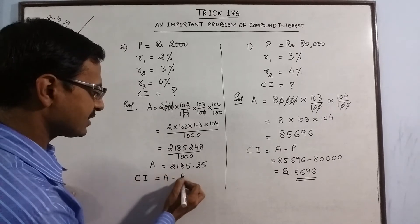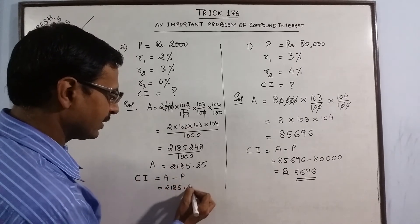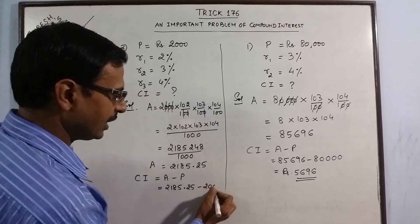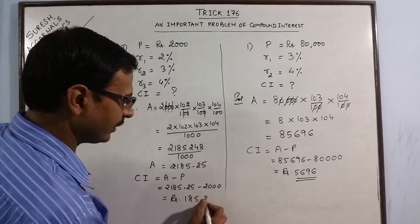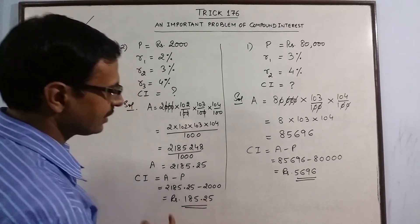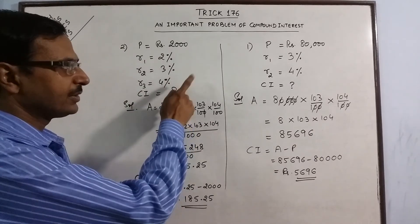The compound interest will be amount minus principal. So if you subtract this amount and the principal 2000 you get the answer as rupees 185 point 25. So this is the compound interest which is received after the end of 3 years.